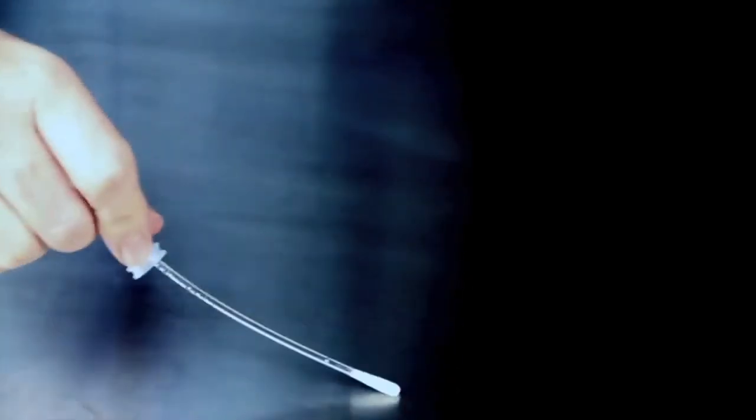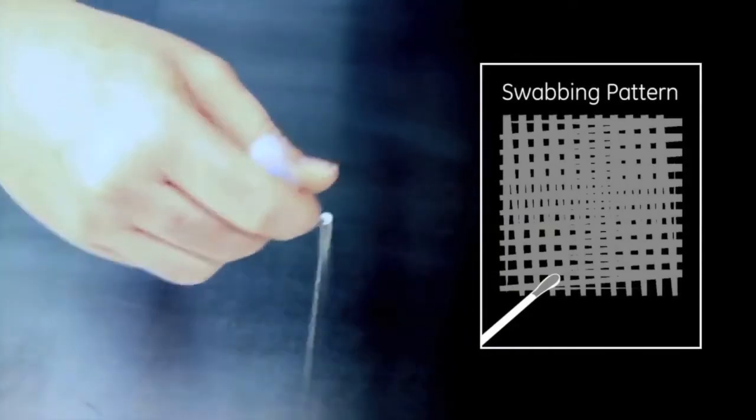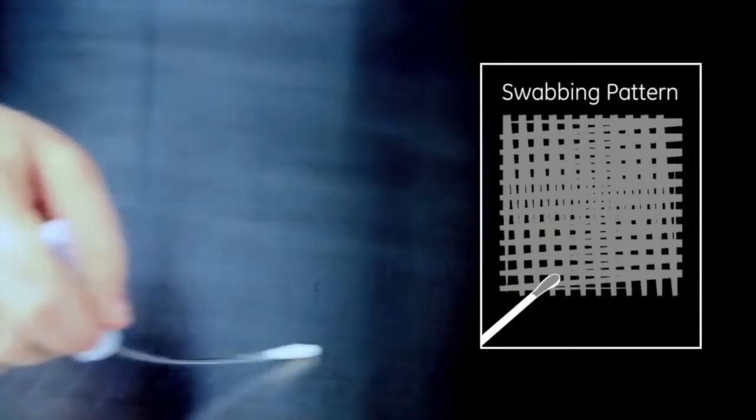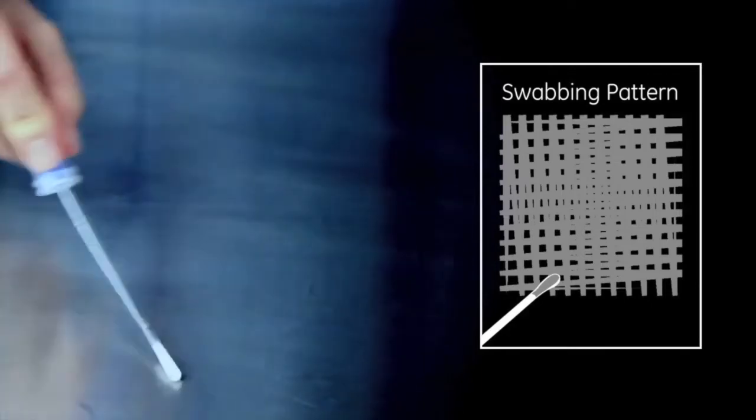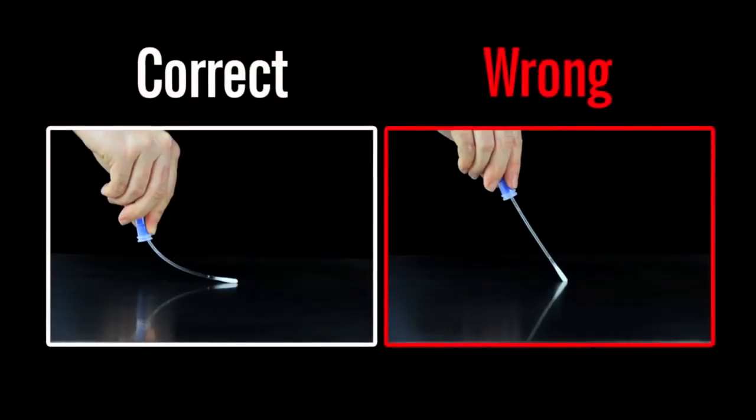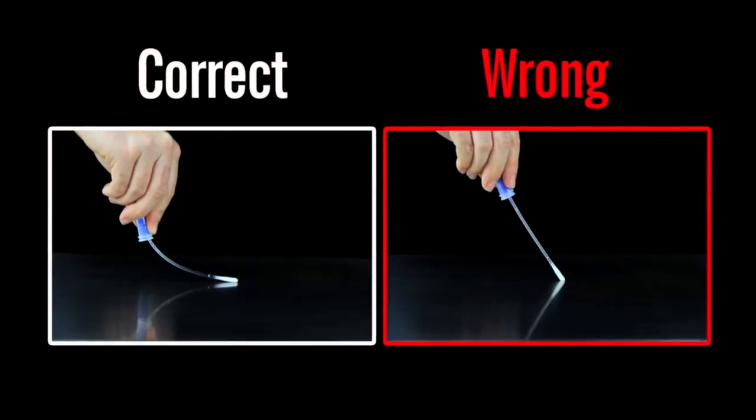Swab a 4x4 inch or 10x10 cm square area in a criss-cross pattern, swabbing the area with even coverage. Apply sufficient pressure to create flex in the swab shaft.